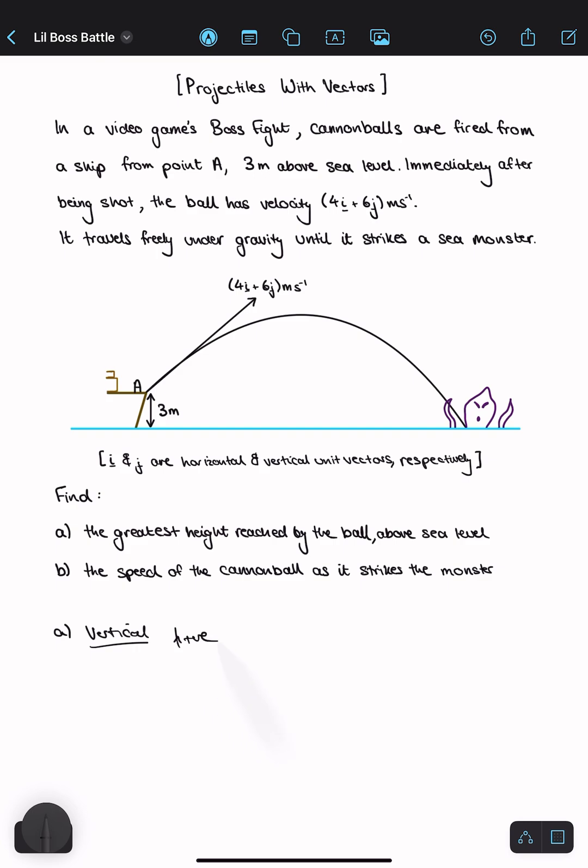I'm going to take upwards as positive. The displacement is what I'm trying to calculate. The initial vertical velocity is just the j component of the vector, so this would be 6 meters per second.